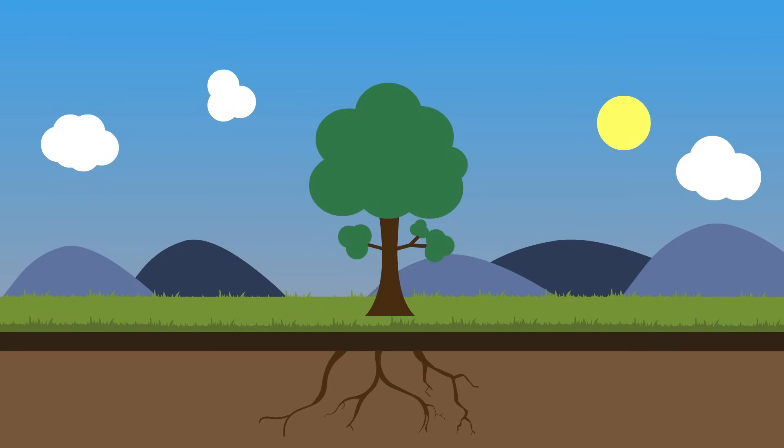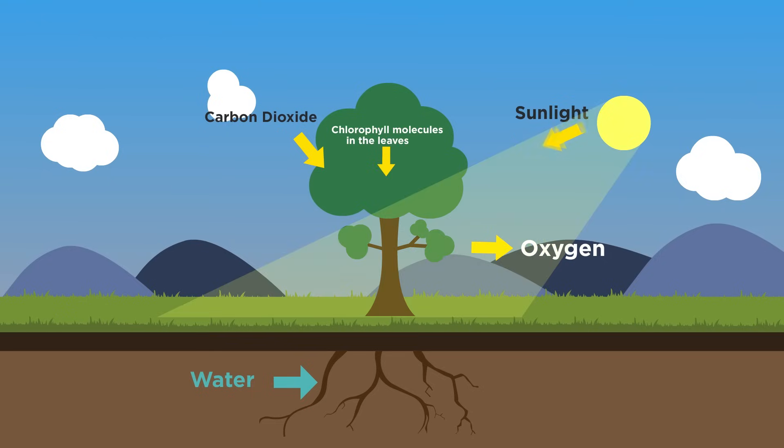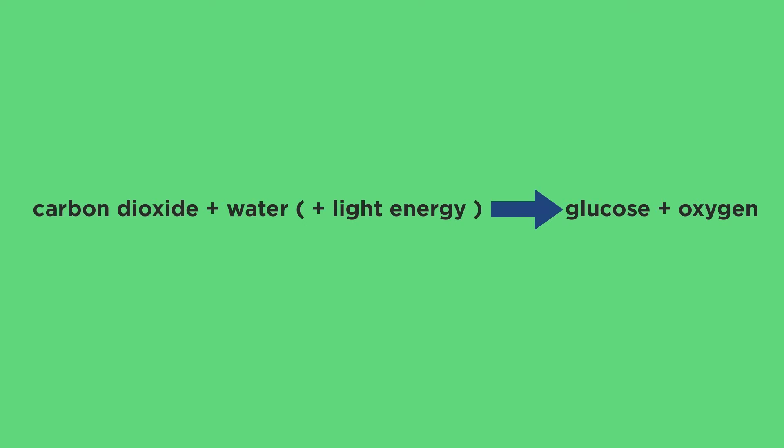Photosynthesis is a chemical reaction in which carbon dioxide and water are converted to glucose and oxygen by the energy provided from light absorbed by chlorophyll. It is an endothermic reaction because it takes in energy from its surroundings. We show the light energy in brackets because while it is not a substance, it is an essential requirement for photosynthesis to happen.